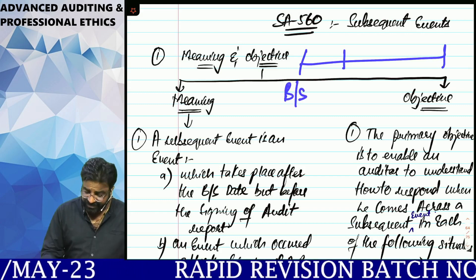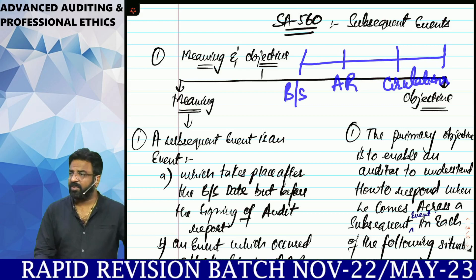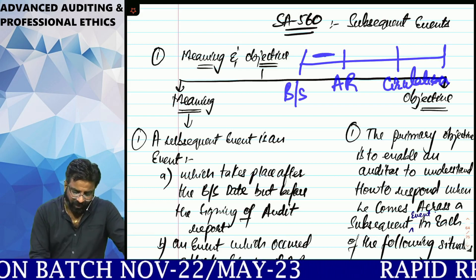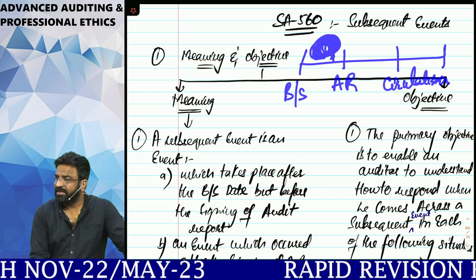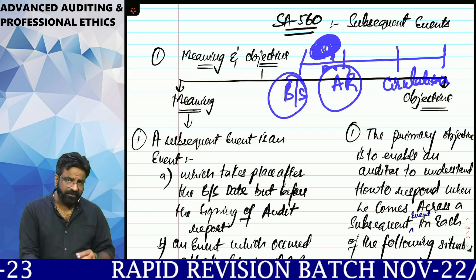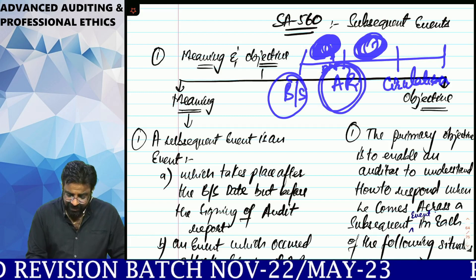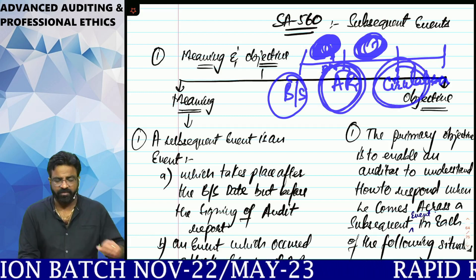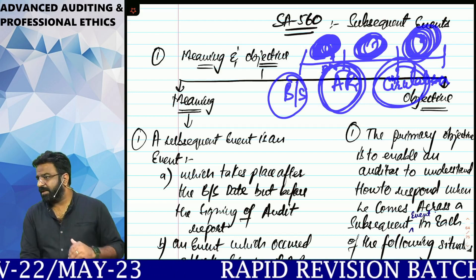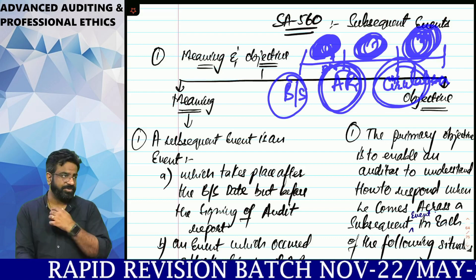There is the balance sheet date, then the audit report signing date, and then the date of circulation of financial statements and the auditor's report to the users, which is generally circulated before the AGM. If the auditor comes to know about an event between the balance sheet date and before signing the audit report — that is situation one. If the event occurs after signing the audit report but before circulation — that is situation two. And if the event occurs after circulation — that is situation three. The most dangerous situation, which cannot be undone, is the third.